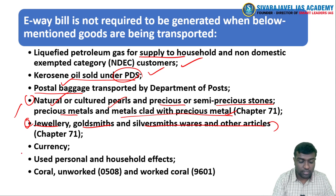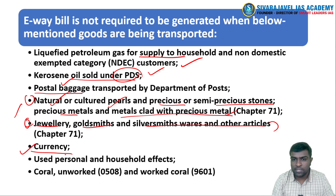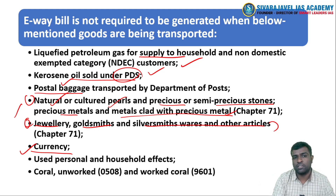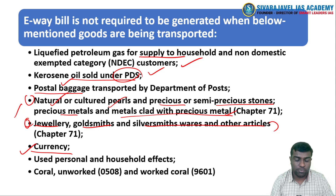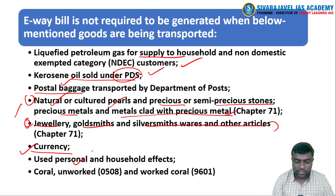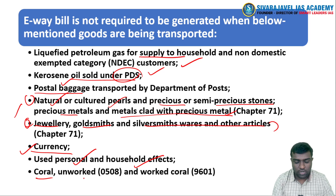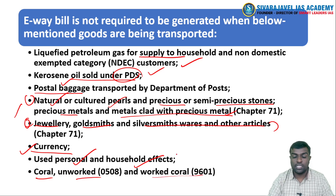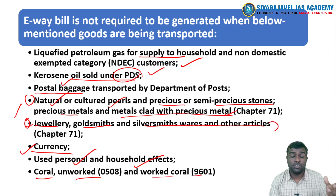Even currency — especially transported by banks, by chest managers, or for ATMs — is also exempted from e-waybill. Used personal and household effects, coral, both unworked and worked coral — these are also items which are exempted from e-waybill.